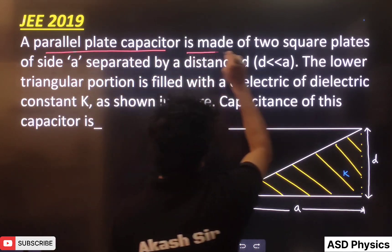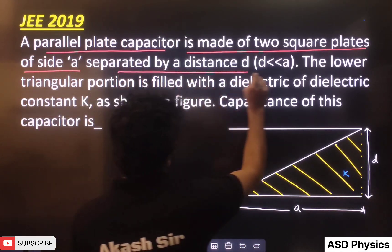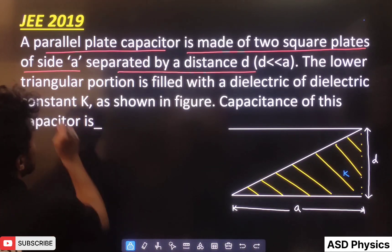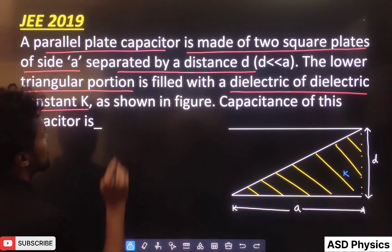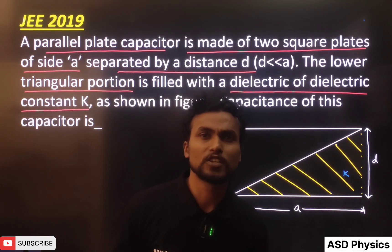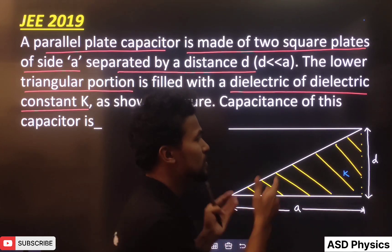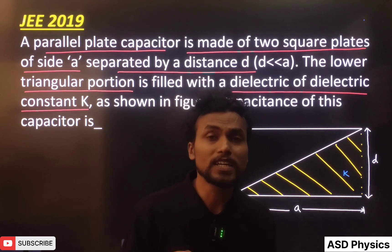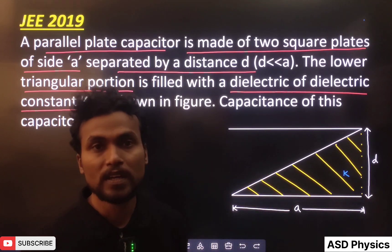A parallel plate capacitor is made of two square plates of side A, separated by a distance D. The lower triangular portion is filled with a dielectric of dielectric constant K, as shown in the figure. We need to find the capacitance of this capacitor. We know how to solve capacitor problems when the dielectric is filled in rectangular or square shape, but here the dielectric is triangular in shape. So we have to use integration, but before that I will tell you some basics.